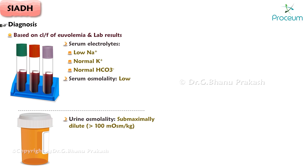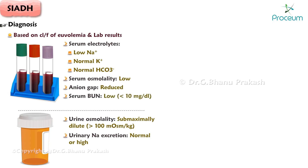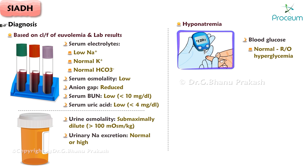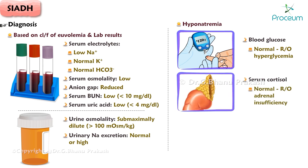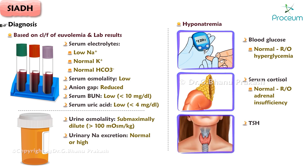Urine osmolality submaxally dilute, more than 100 milliosmoles per kilogram. Urinary sodium excretion normal or high — not reduced like other causes of hyponatremia. Anion gap reduced. Serum BUN low, less than 10 milligrams per deciliter. Serum uric acid low, less than 4 milligrams per deciliter. Blood glucose normal, ruling out hyperglycemia. Serum cortisol normal, ruling out adrenal insufficiency. TSH normal, ruling out hypothyroidism.